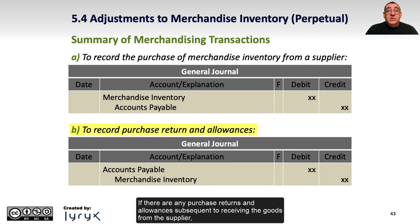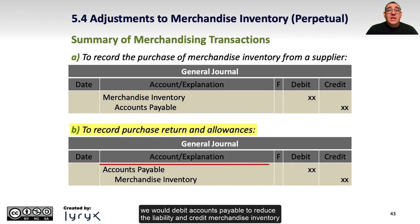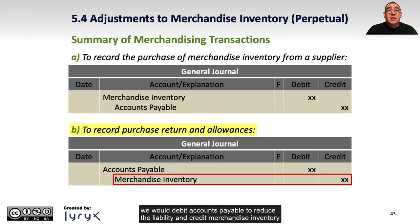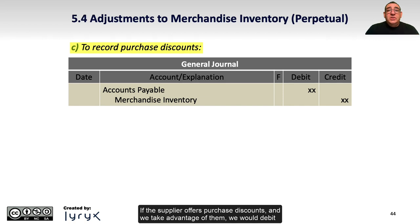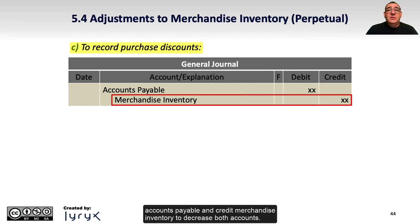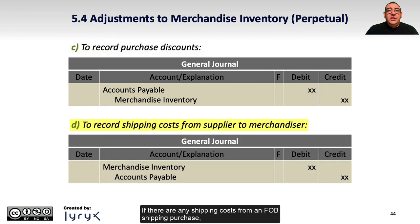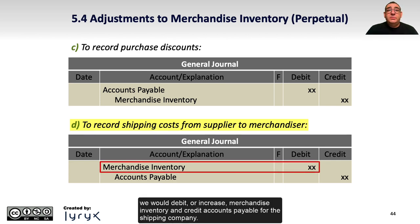If there are any purchase returns and allowances subsequent to receiving the goods from the supplier, we would debit accounts payable to reduce the liability and credit merchandise inventory to reduce the value of the inventory by the amount of the return or allowance. If the supplier offers purchase discounts and we take advantage of them, we would debit accounts payable and credit merchandise inventory to decrease both accounts. If there are any shipping costs from an FOB shipping purchase, we would debit or increase merchandise inventory and credit accounts payable for the shipping company.